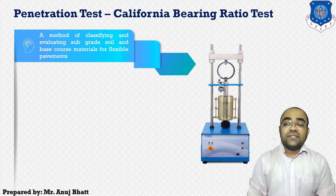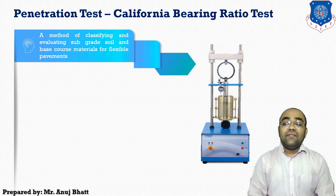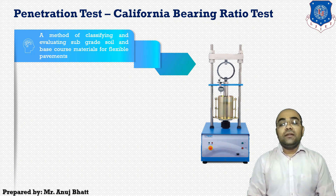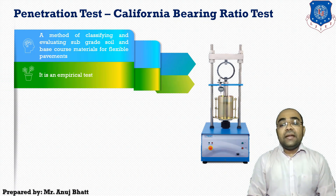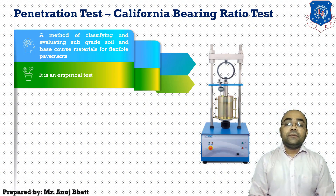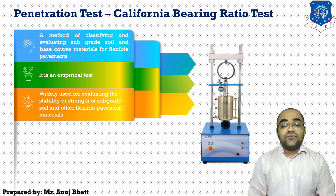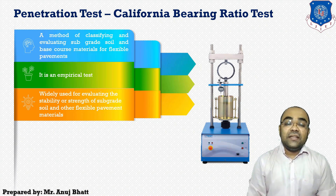The California Bearing Ratio test was developed by the California Division of Highway as a method of classifying and evaluating the soil subgrade and the base course material. It is an empirical test that has been used to determine the material properties for pavement design — widely used for evaluating the stability or strength of the subgrade soil and other flexible pavement materials.